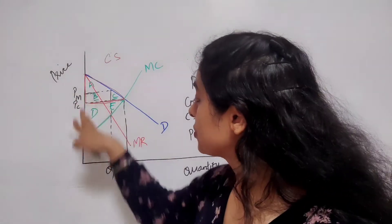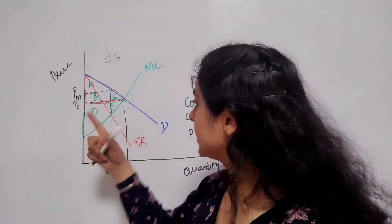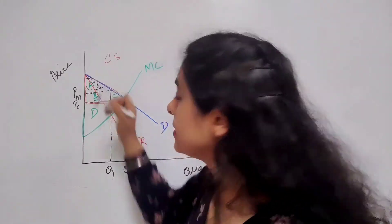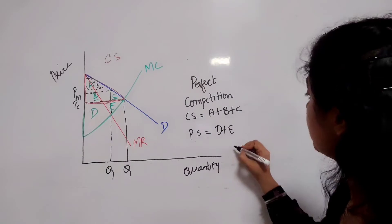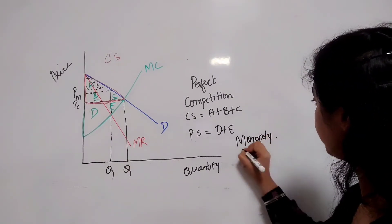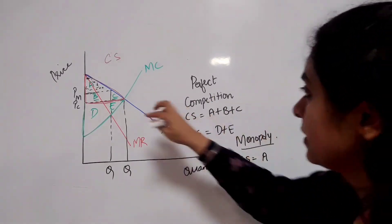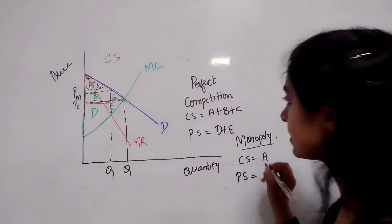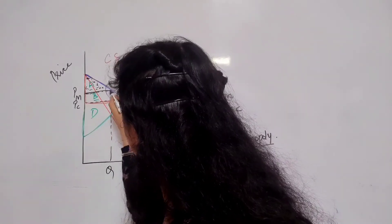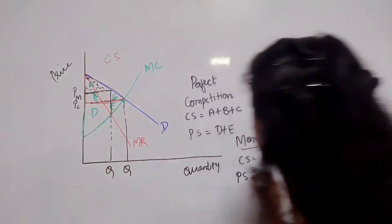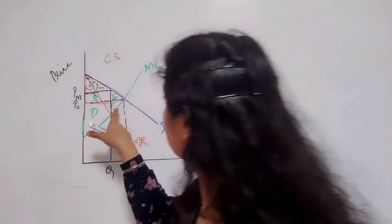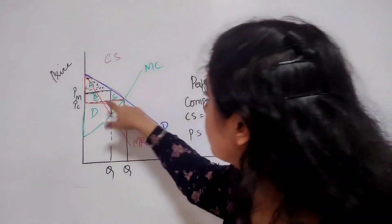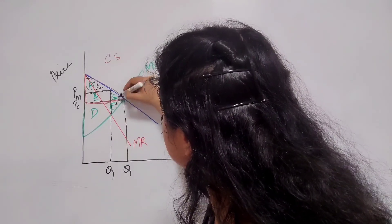For a monopolist, the price charged is greater than in a perfectly competitive market and the quantity is less. So only this portion A represents the consumer surplus in the case of monopoly — consumer surplus is represented by area A alone, so there is a loss of consumer surplus. Producer surplus here is this whole area B plus D. Overall there is a loss of the E portion in terms of producer surplus and the C portion in terms of consumer surplus, so overall there is a loss of the total portion C plus E.